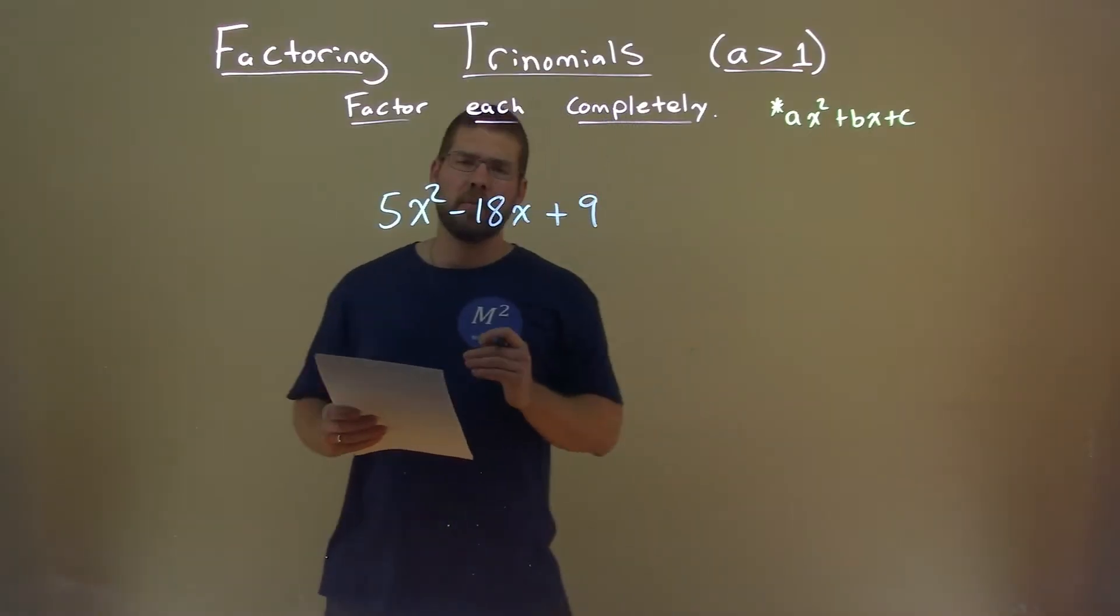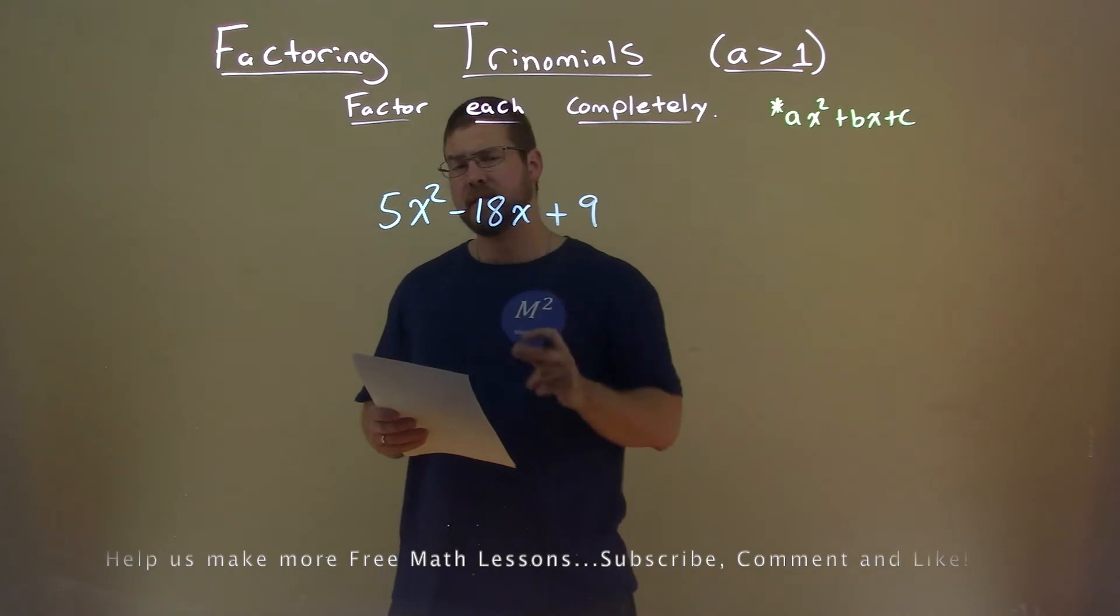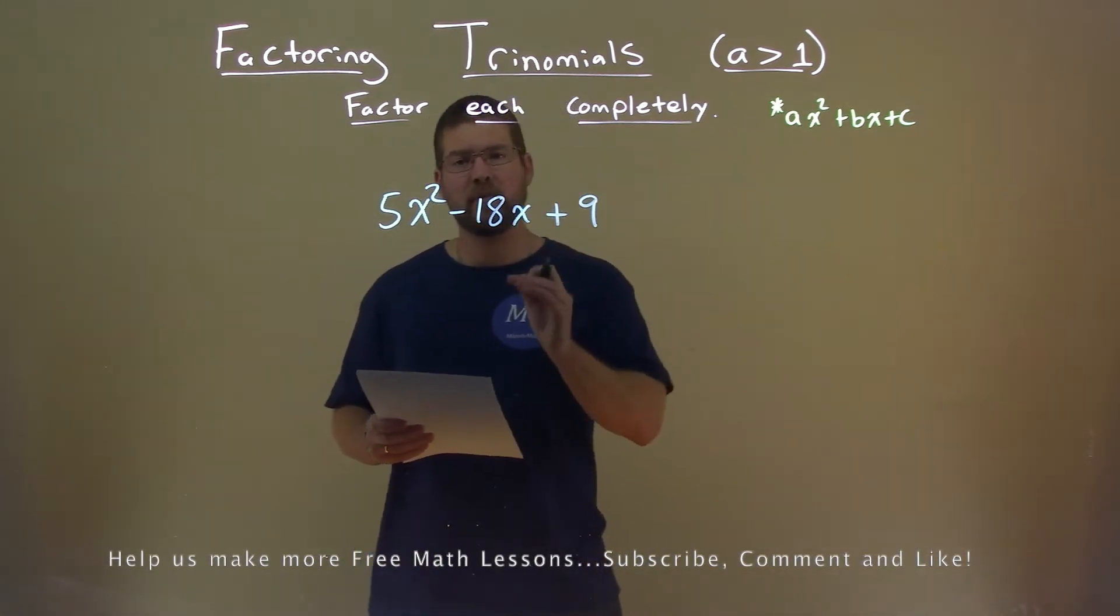We're given this problem right here, 5x squared minus 18x plus 9, and we want to factor this completely.